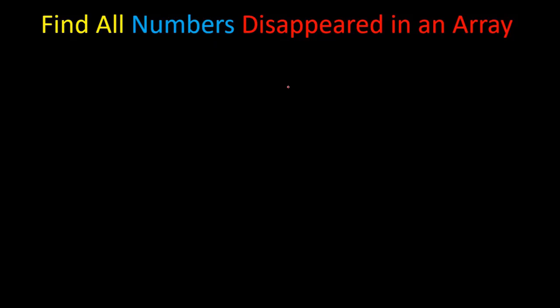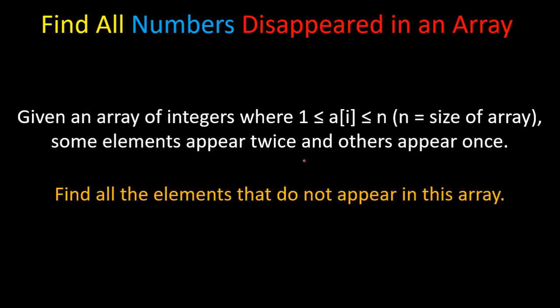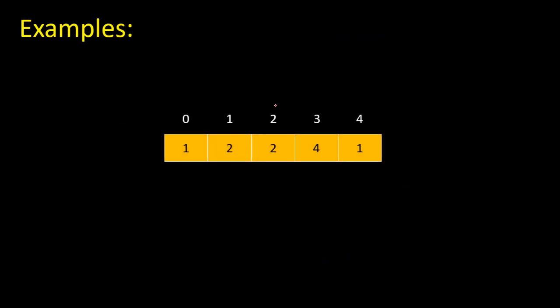Welcome to this video. We're going to solve a coding interview question: Find All Numbers Disappeared in an Array. You're given an array of integers where 1 <= a[i] <= n, where n equals the size of the array. Some elements appear twice and others appear once. We have to find the elements that do not appear in this array, and we have to solve this problem in constant space complexity and linear time complexity.